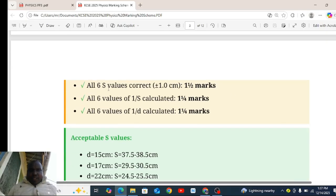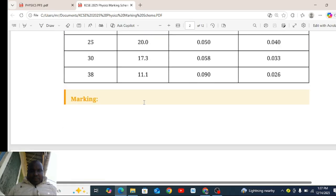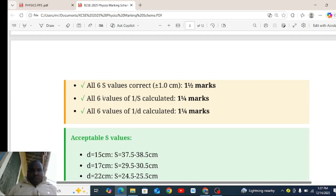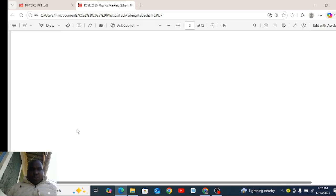All six S values correct to plus or minus 1. If your value is 37 you get. All values of one over S calculated, all values of one over D calculated. Accept the values between D15S like this. We have given the range here 10.5 to that one, it is a range.